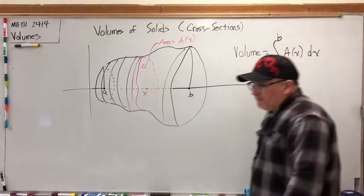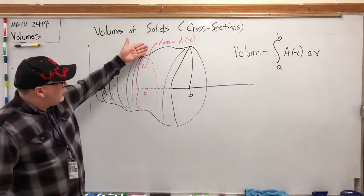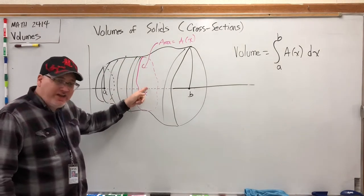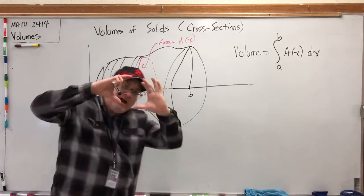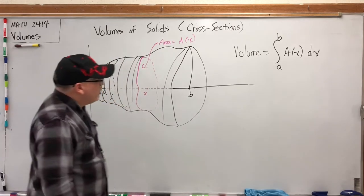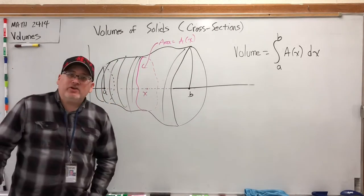So pretty simplistic. All we have to do for a given solid is come up with the function that says, tell me where to cut it, and I'll calculate the area that you see on that cross-section. Once we can figure out that, then we just have to integrate it.